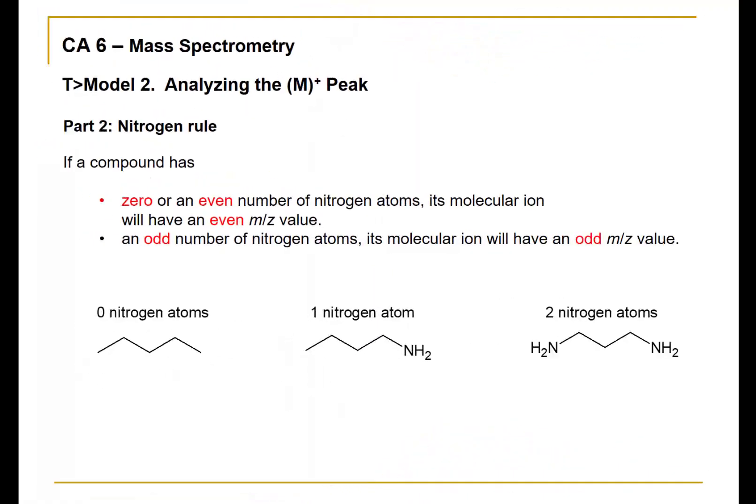We are continuing our investigation of why it is important to analyze the M plus peak, or the molecular ion peak, and what information can be gleaned from this analysis. This next part concerns the nitrogen rule. Nitrogen in organic compounds will be making three covalent bonds, and therefore this will affect the nominal mass of the molecular ion.